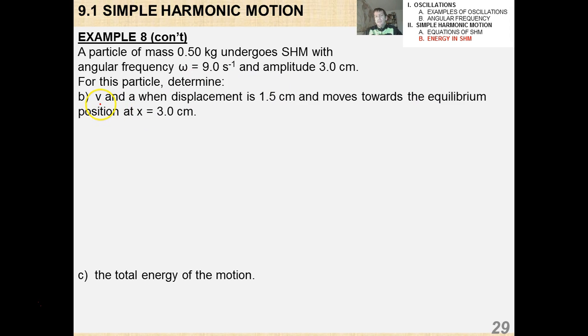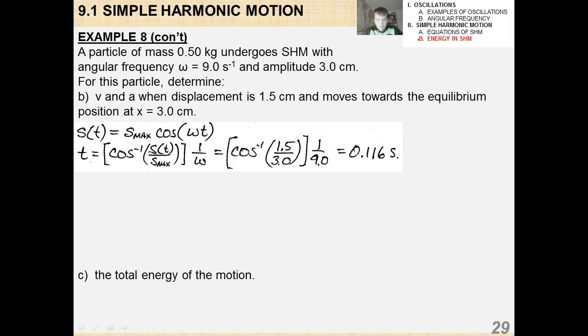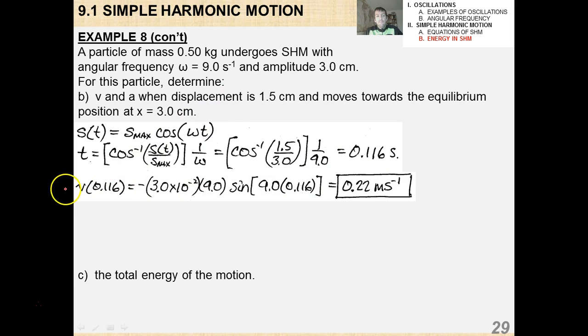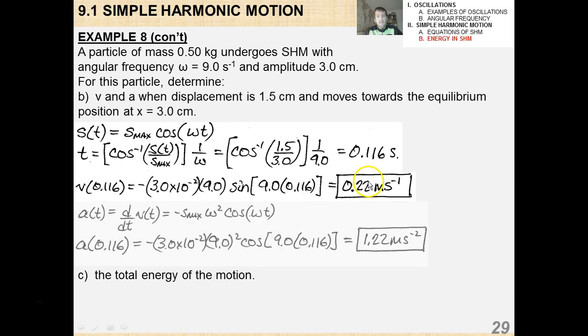Again, find v and a, the velocity or the speed and the acceleration under these conditions, when it's moving towards the equilibrium position at 3 centimeters, and the total energy of the motion. So you're going to need to pause the video and probably work these out and spend a couple of minutes working them. Okay, so in this case, I got that when the displacement is at 1.5 centimeters, that's at a time of 0.116 seconds, the speed at this time is 0.22 meters per second. Now the acceleration then would be 1.22 meters per second squared, so make sure that you can follow my rationale with the mathematics.